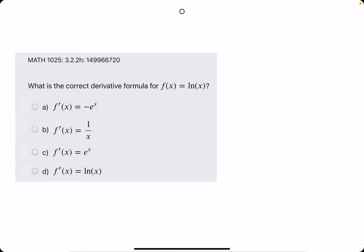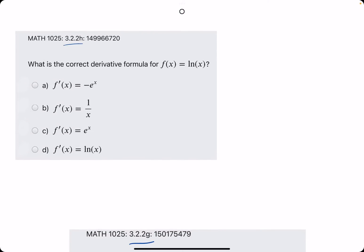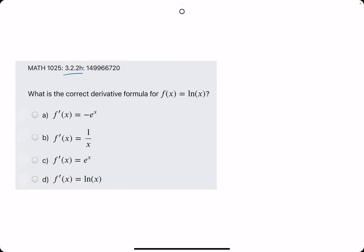Okie dokie. In this problem, we will cover an example for 322h and 322g. They are just both very quick problems, so I figured, why not?